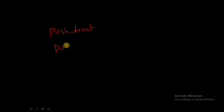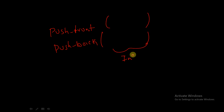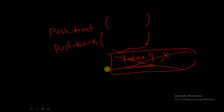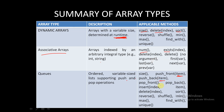For `push_front` and `push_back`, we do not provide an index value — only the item argument is passed, so only one argument is present. In the case of `insert`, two arguments are required: the index and the item.